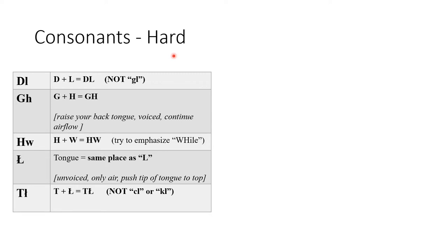Now we've got the consonants I consider to be hard. The reason why is because they either don't exist in English or they are just hard to pinpoint when you're speaking the language. I'll pronounce the sounds — this is how we write them in Navajo — and then I'll talk about their pronunciation afterward. We've got DL: to make this sound, it doesn't occur in the back of the mouth — we're not saying GL — it occurs at the front.